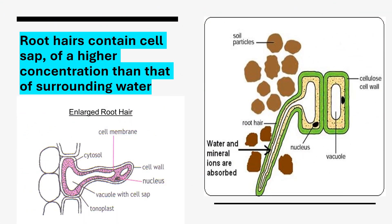Root hairs contain cell sap of higher concentration than that of surrounding water. The cell sap concentration is present inside the vacuole, and the solute concentration of the cell sap is higher than the surrounding water. Outside the root hair, the solute concentration is less, and inside the root hair it is higher, so water is drawn from outside to inside.